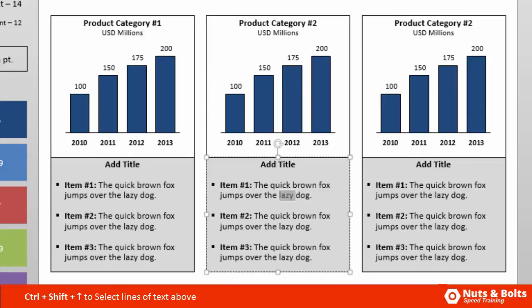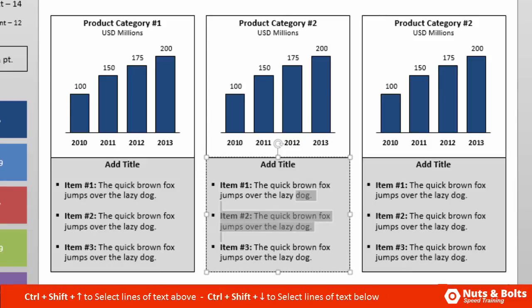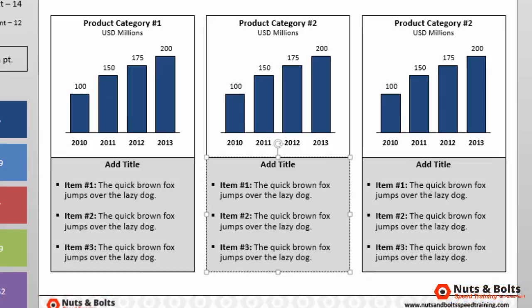Control+Shift+Up Arrow will select the rest of that paragraph. Control+Shift+Down Arrow will begin selecting lines of text and paragraphs as you move down the object.